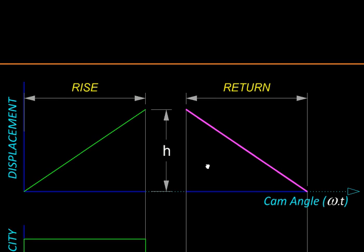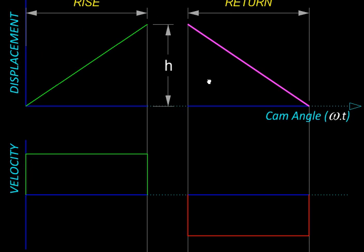Now if we think of the velocity, since velocity is a derivative of displacement with respect to time, it will be the slope of this graph. And since this displacement graph is a straight line, its slope is constant, so velocity will be constant.